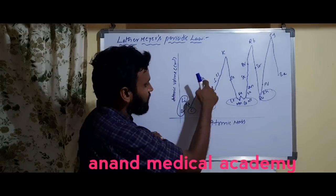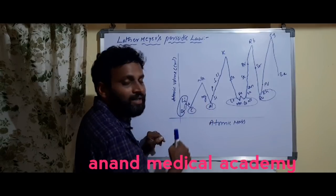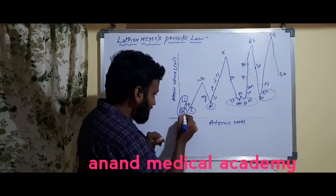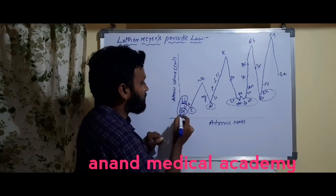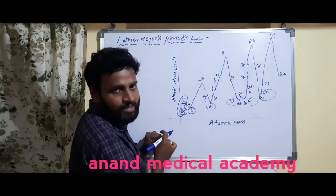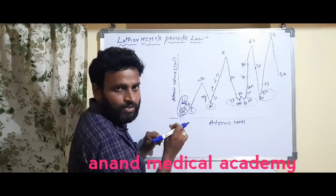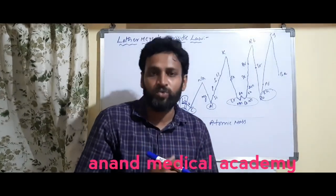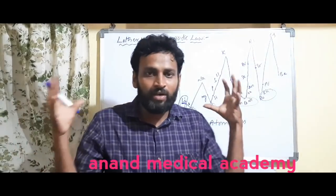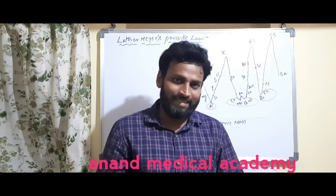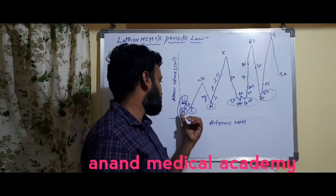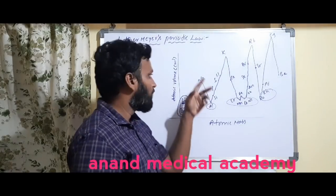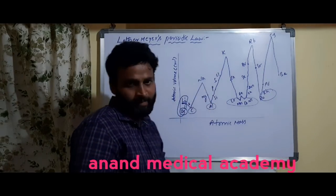There is one exceptional case: beryllium has less atomic volume than lithium. Normally after alkali metals you get alkaline earth metals with lower volume, but here beryllium's atoms are very closely packed. When atoms are closely packed, volume decreases. That is the only reason beryllium has a lower atomic volume compared to lithium.